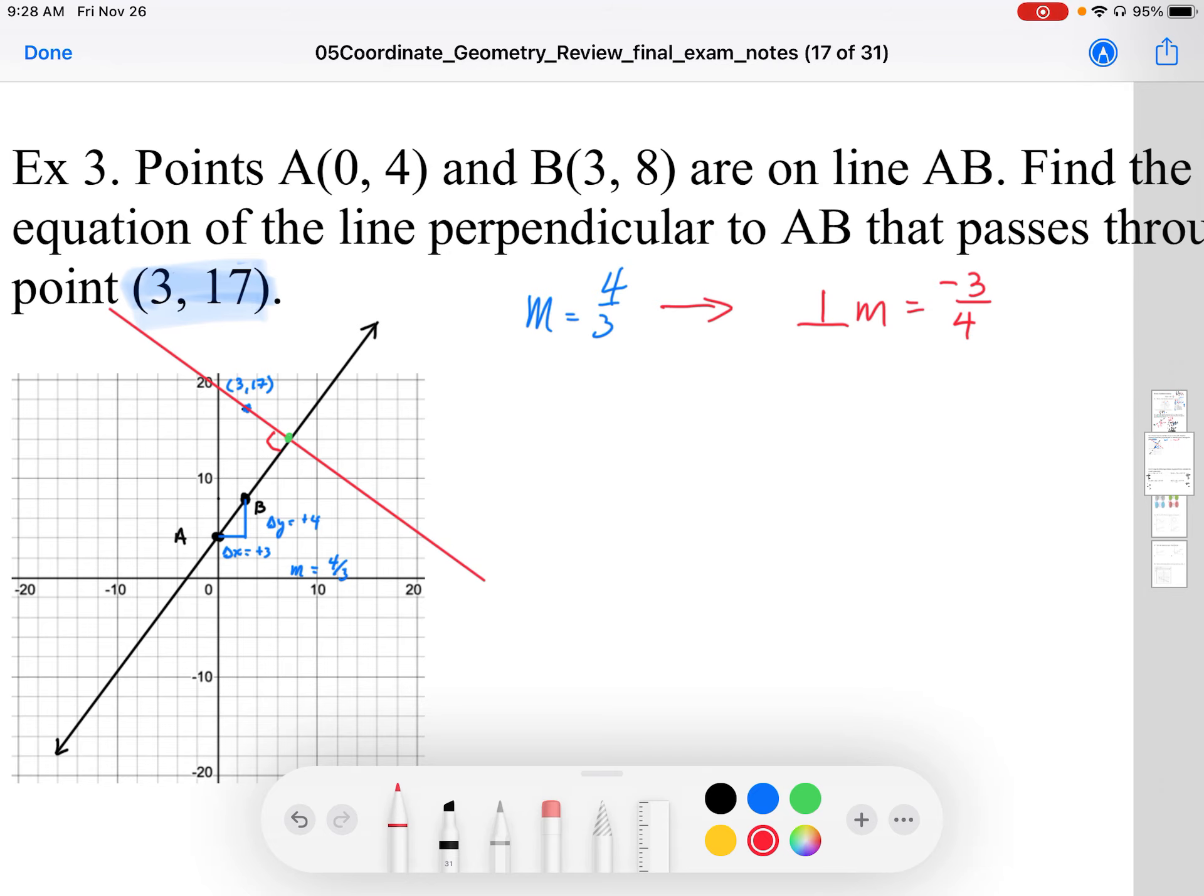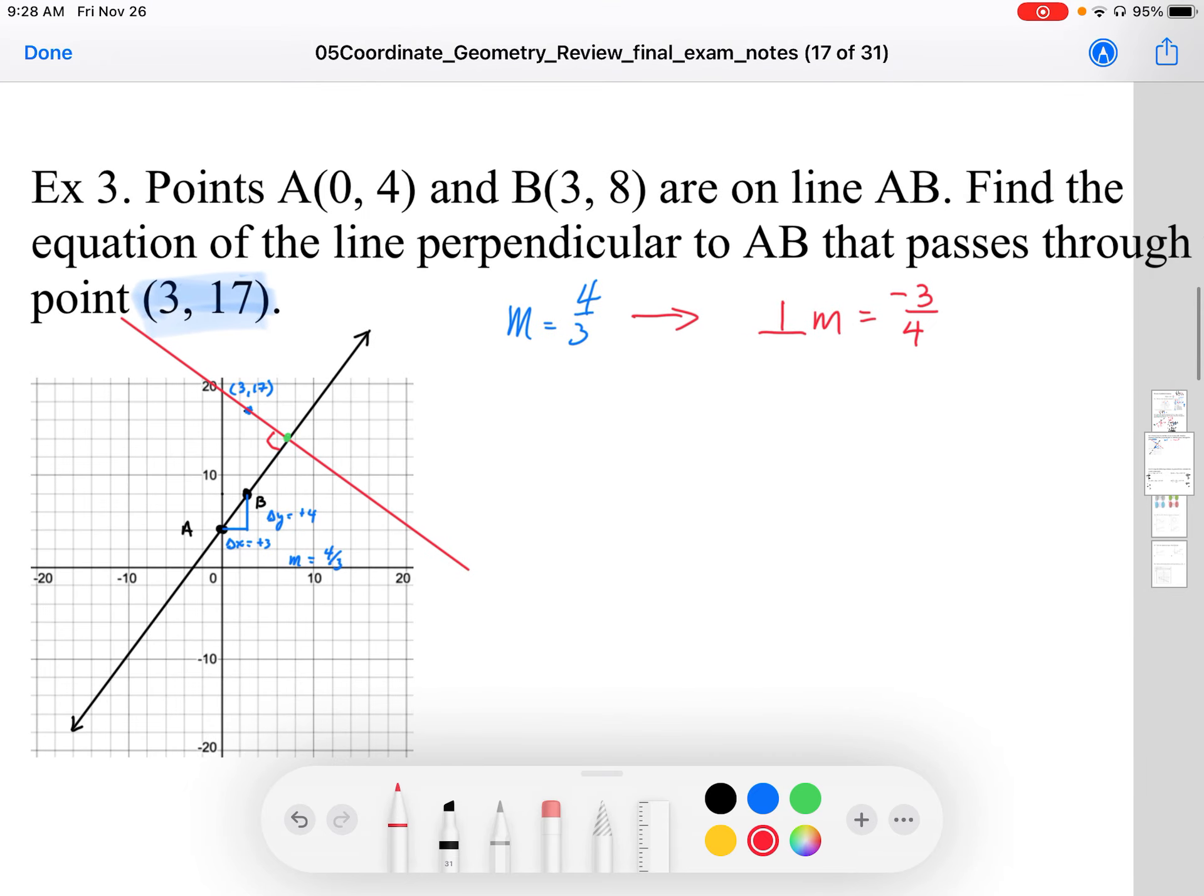So now we have the slope of that red line and a point on that red line. I'm going to rewrite that equation using my point-slope form. I've got my slope, and I'm going to plug in the coordinate. The x coordinate is 3, and the y coordinate is 17. There's the equation of my line.